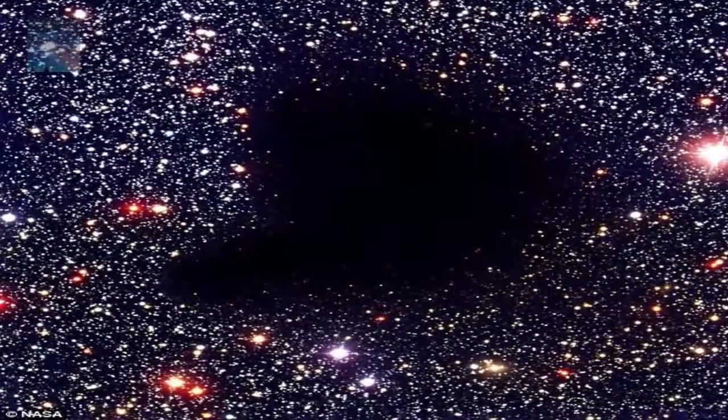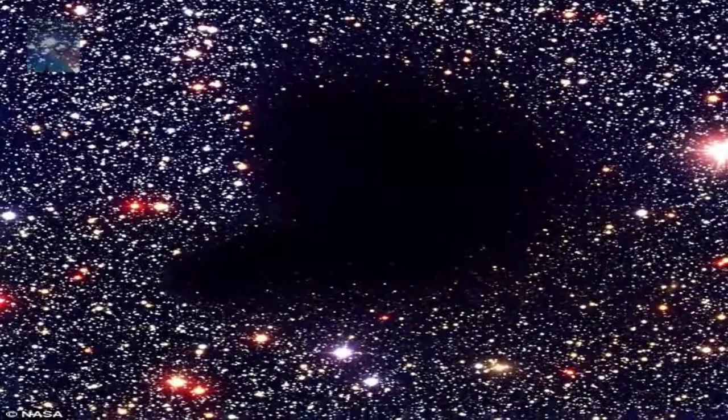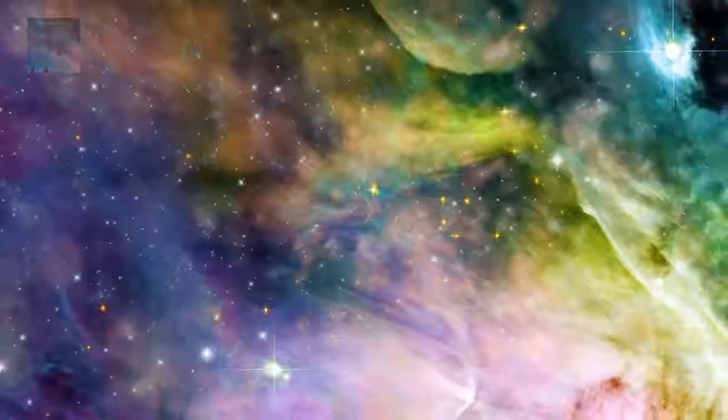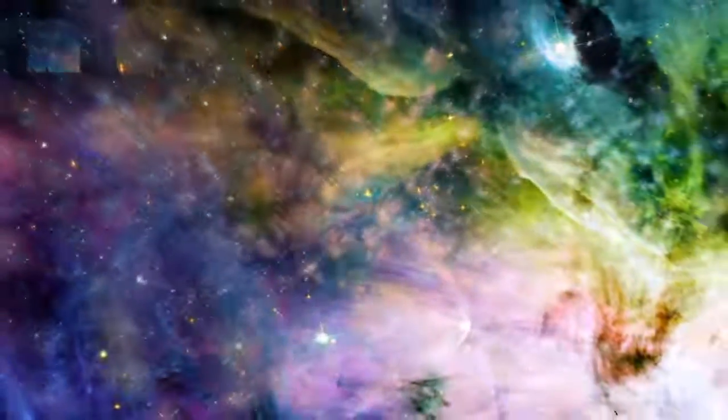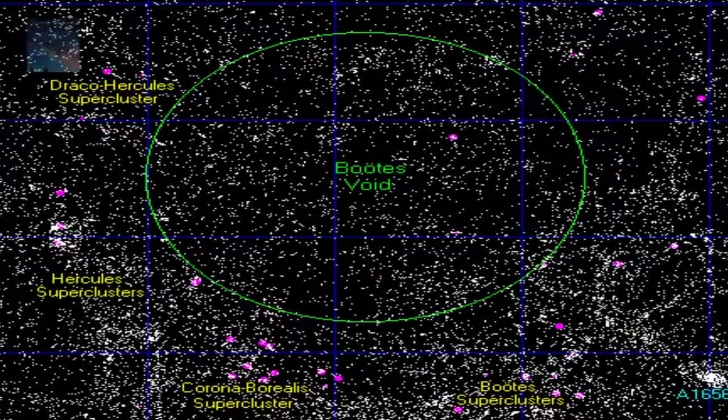The super void, or the giant nothing as we are calling it, is only about 3 billion light years away from Earth, a relatively short distance in the cosmic scheme of things. It is located in the Voidus constellation area of space.